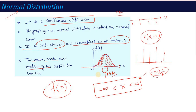If our distribution satisfies this condition, then we call this type of distribution a normal distribution. So normal distribution is simply a continuous distribution with a bell-shaped curve that is symmetrical about its mean.